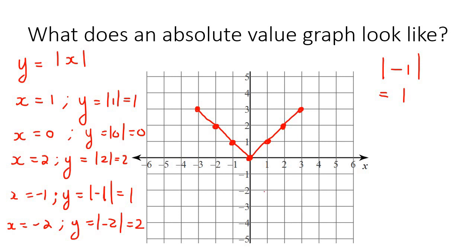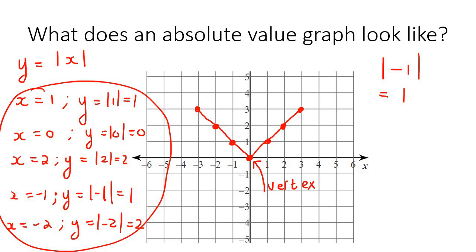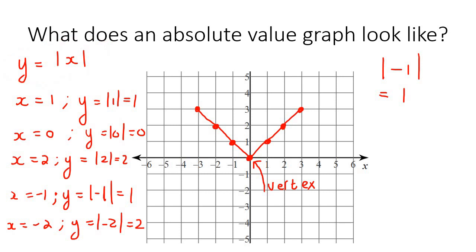This part here is called the vertex — that's the point where the V is. V for vertex — that's nice to remember. But we need to upgrade our skills, because in a test or exam situation you don't have time to write out all these points and plot them. So we're going to learn how to graph these absolute value equations pretty quickly.